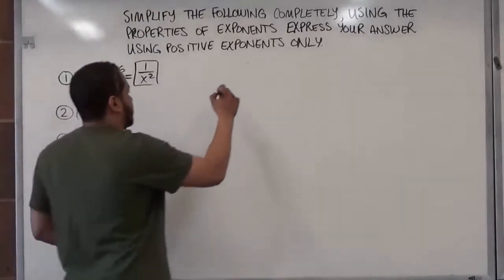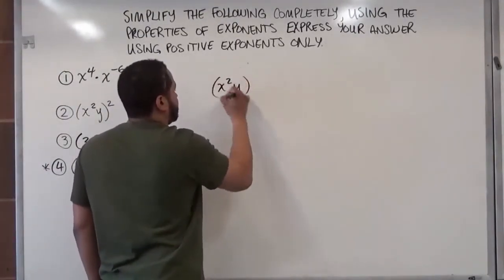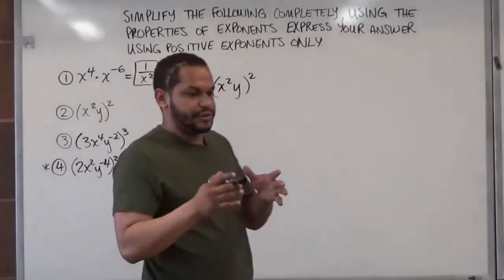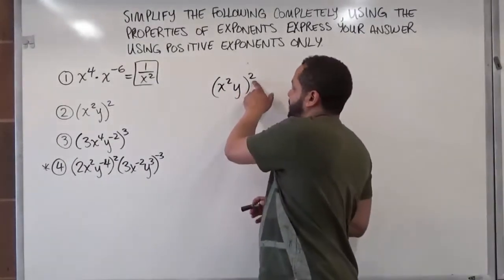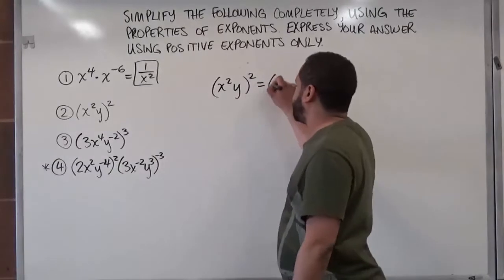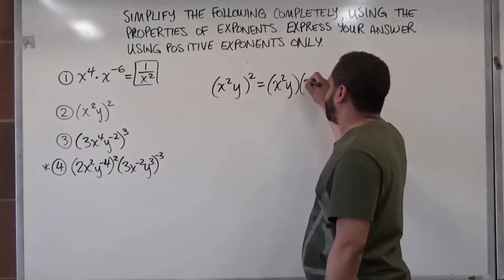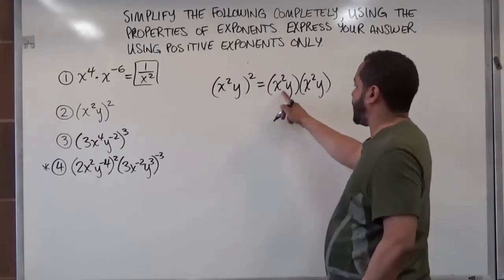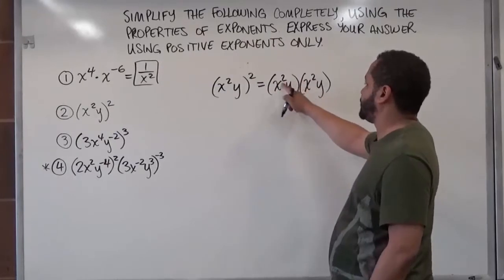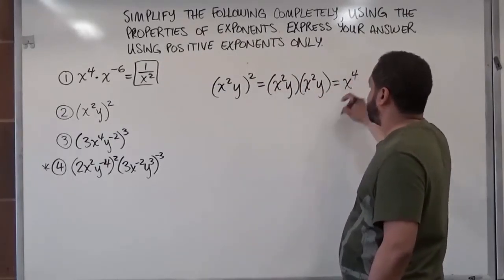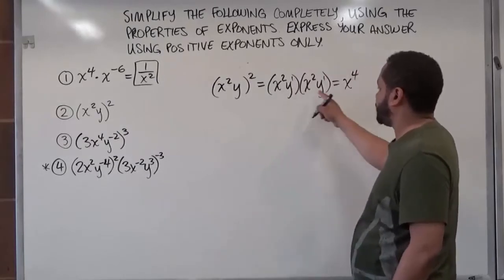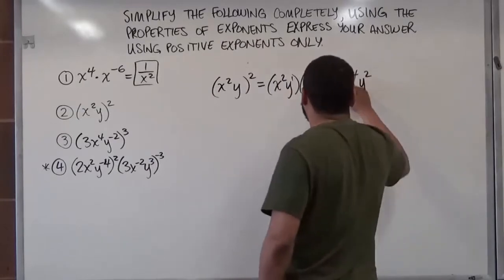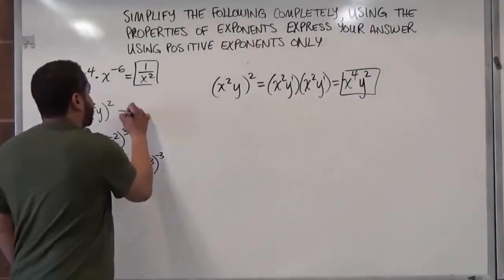Now in this one we have a perfect square — x to the second power times y to the second power. We know that when we have an exponent, we expand the term by writing it as many times as the power says, so we're multiplying this very same thing times itself. Using the rules of exponents, we're adding the powers: x squared times x squared gives us x to the fourth. Y to the first times y to the first is equivalent to y to the second, because 1 plus 1 is 2. Here's our solution.